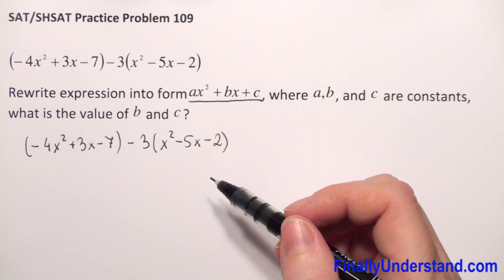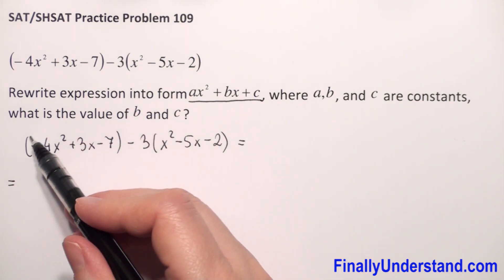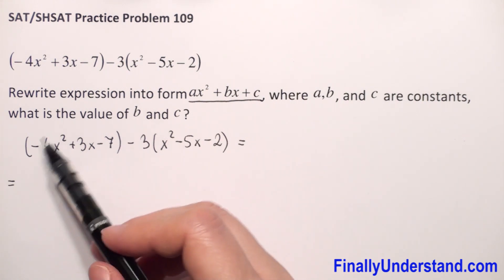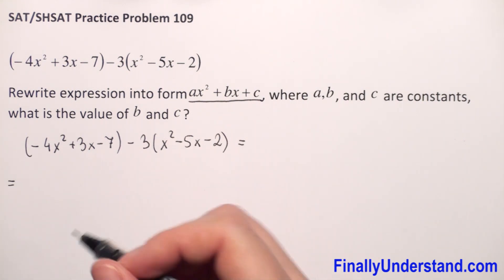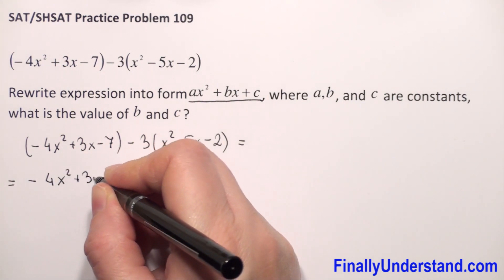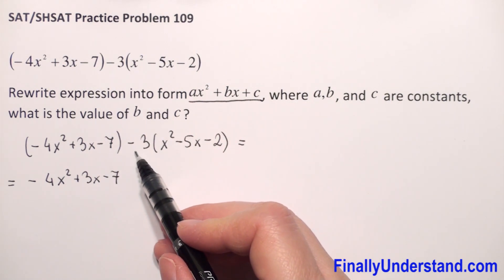So what I will do first, I can take down the first parenthesis because we don't have any operation which we can do inside and we don't have anything outside. So we have negative 4x squared plus 3x minus 7.